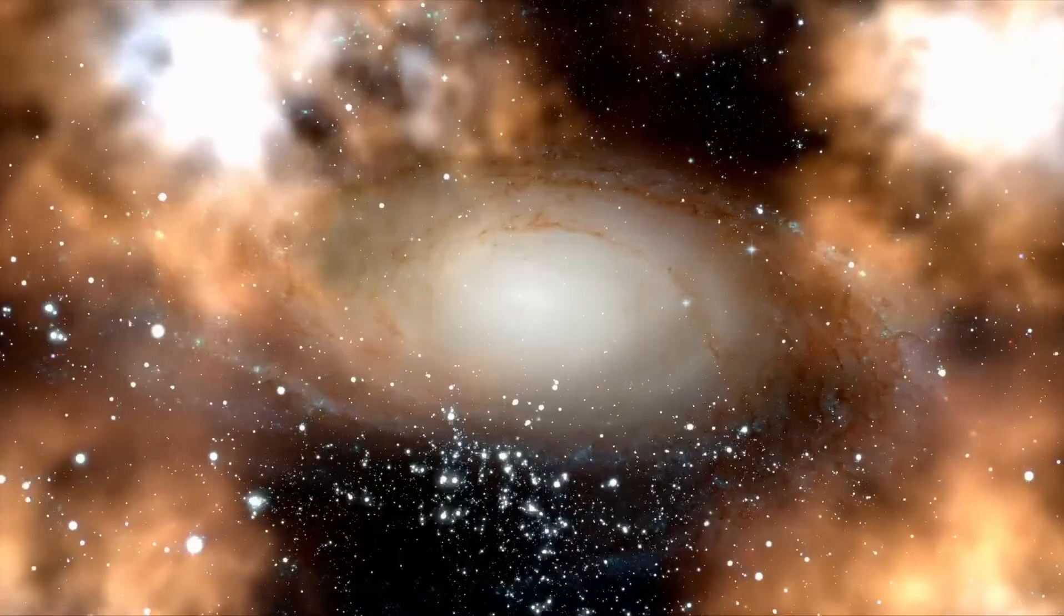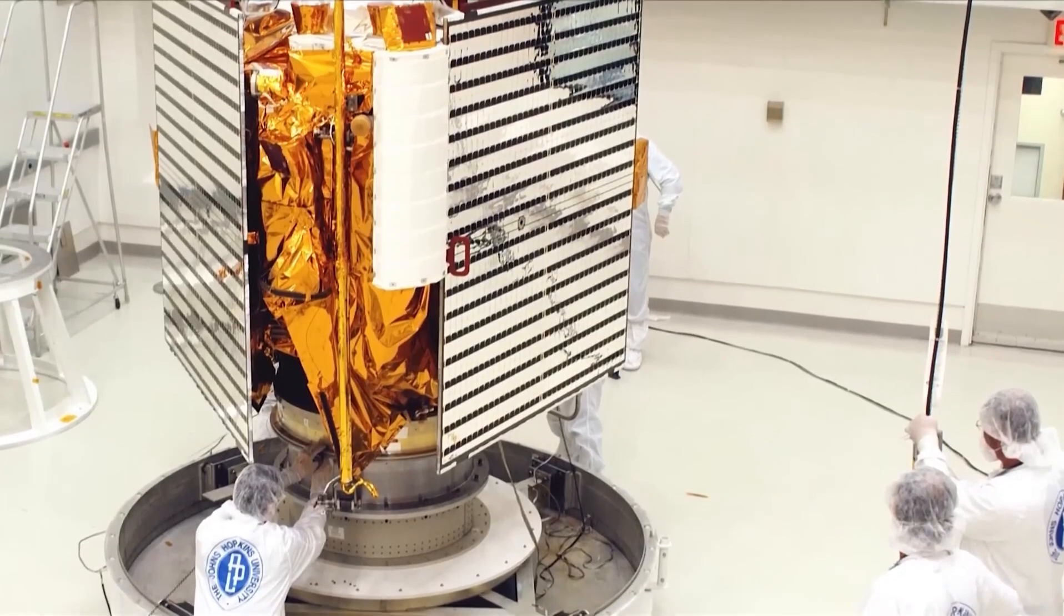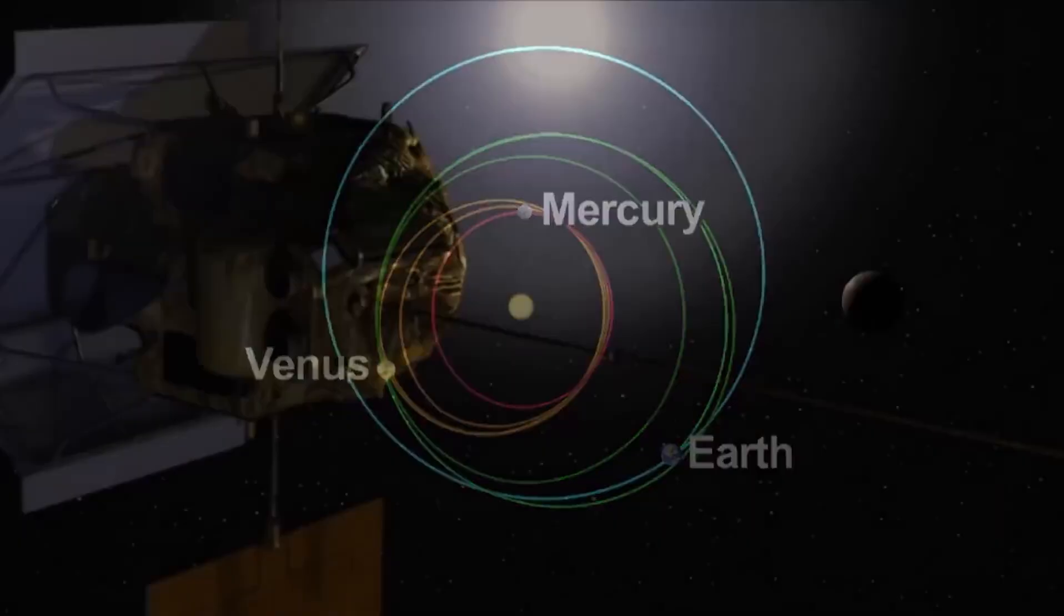However, it's no wonder that Mercury sometimes resembles a planetary furnace. After all, it's just 58 million kilometers away from the Sun. As a result, it's also the fastest planet in the solar system and takes just 88 days to orbit our host star completely.